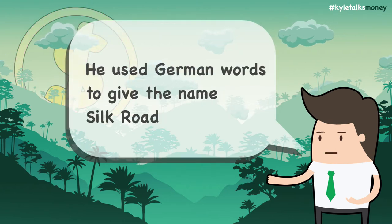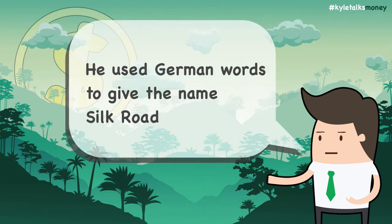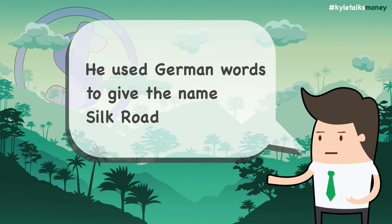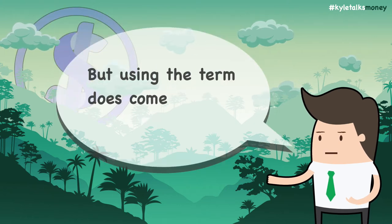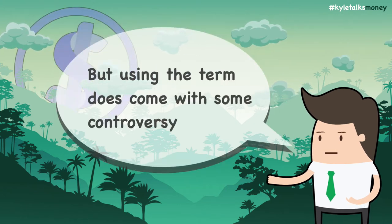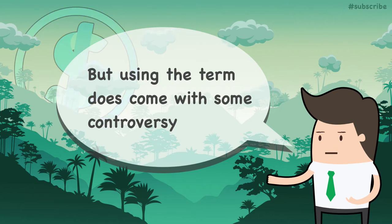Being a German native, he used the names Seidenstraße and Seidenstraßen, which translate to Silk Road and Silk Roads. Unsurprisingly, use of the term Silk Road is not uncontroversial.